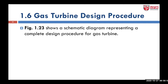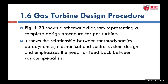Figure 1.23 shows a schematic diagram representing a complete design procedure for a gas turbine. The diagram shows the relationship between thermodynamics, aerodynamics, mechanical design, and control system design, and emphasizes the need for feedback between various specialists.